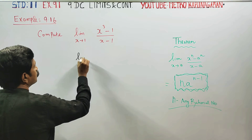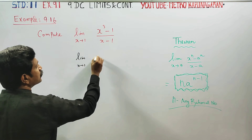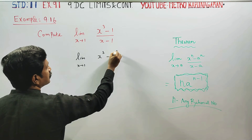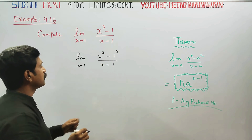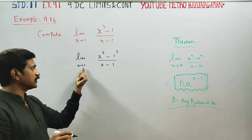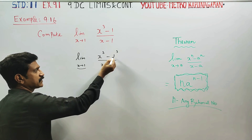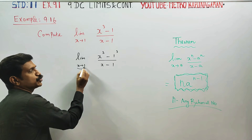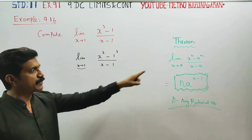Limit x turns to 1: x power 3 minus 1 can be written as 1 power 3, x minus 1. As x turns to 1, this is the approaching value, and there is a ready-made formula.